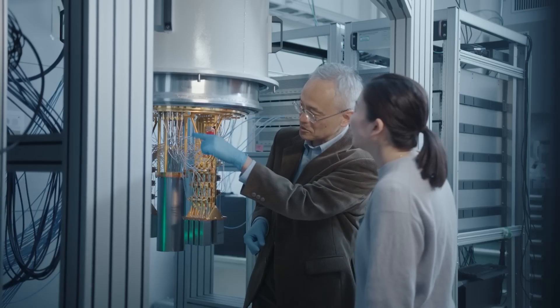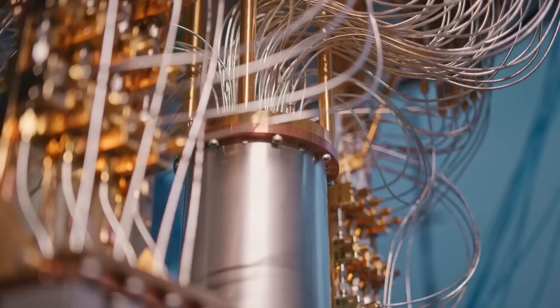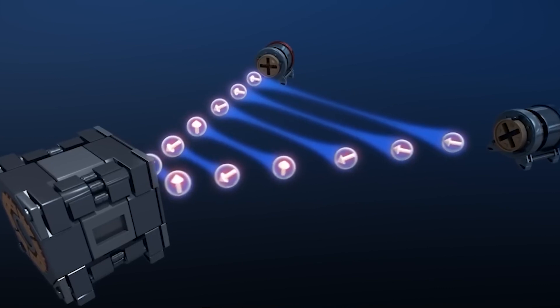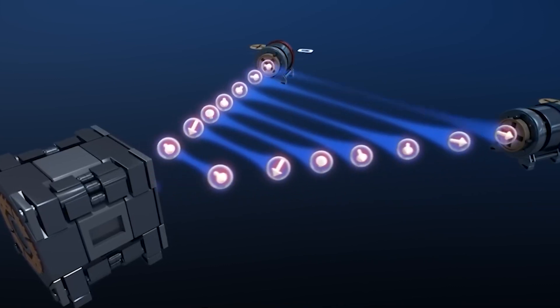In this video, we will talk about how physicists in Japan achieved a remarkable feat of quantum coherence using light-absorbing molecules and a metal-organic framework. This breakthrough could make quantum devices cheaper and more accessible in the future.